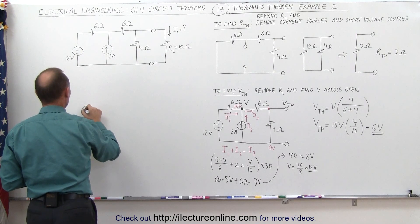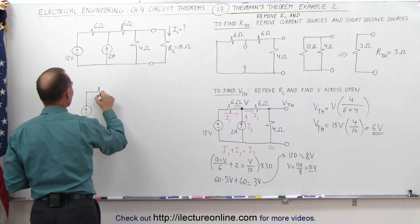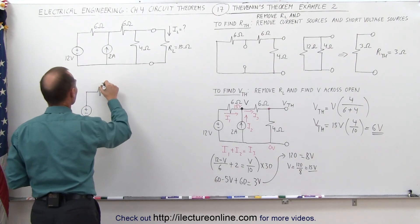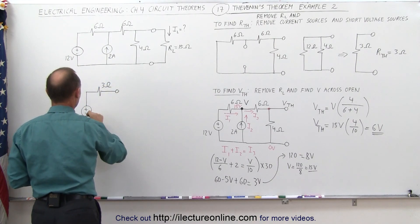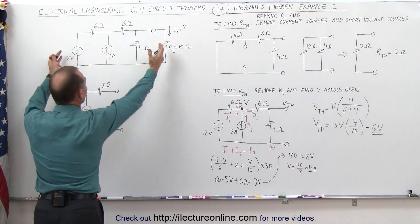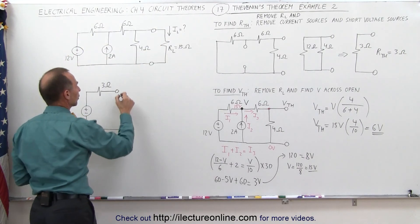which means we can take this entire circuit and replace it by the simple circuit, a voltage source of 6 volts, and a resistance of 3 ohms. This entire circuit has now become the Thevenin equivalent circuit.